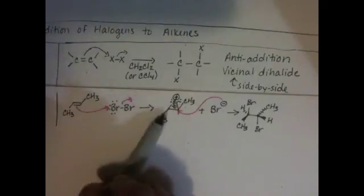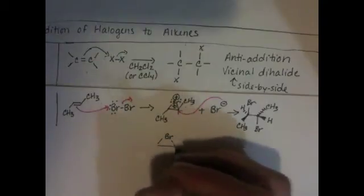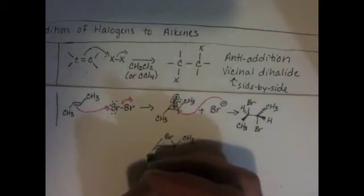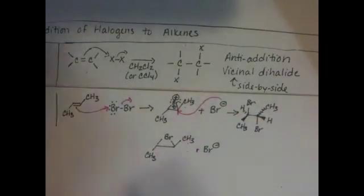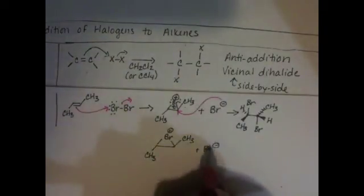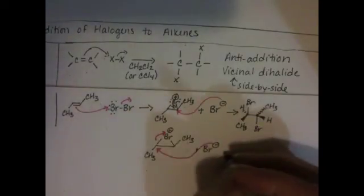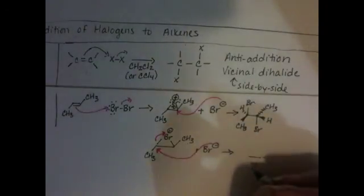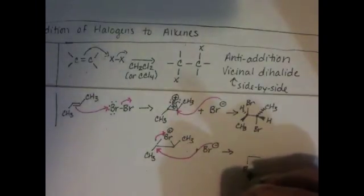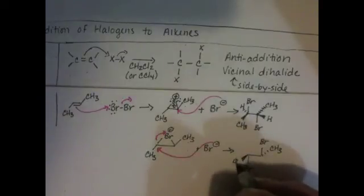We also could have the bromide ion attack at the other carbon. So let's draw a new intermediate so that we can show that possibility. Here we're going to have bromide attacking at the other carbon and this carbon-bromine bond breaking. And that's going to produce that's the bromine that we added. That's the bromine that was already present. We've got our methyl group going back and our other methyl group coming in front.